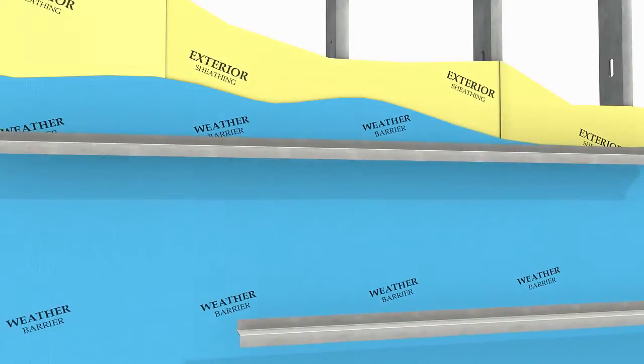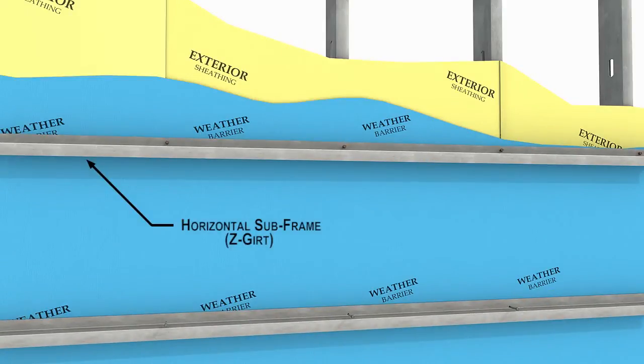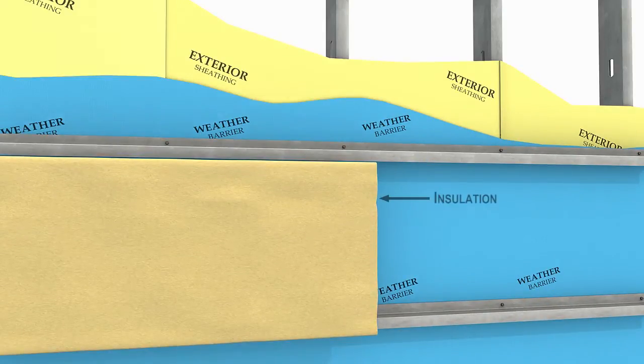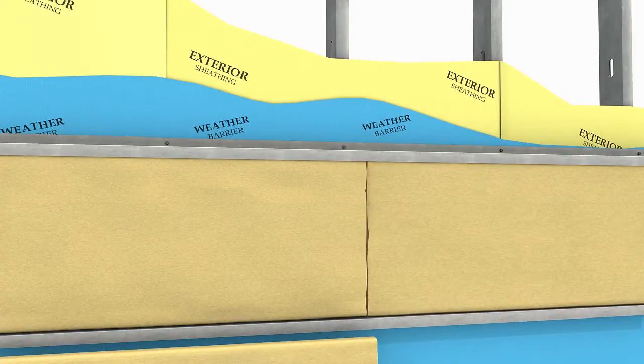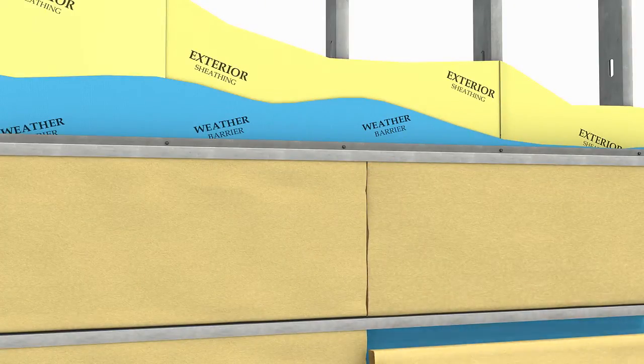Horizontal sub-frames, either aluminum I-frames or Z-girts, are mounted two feet on center vertically. Insulation should be installed according to the plans and manufacturer recommendations.